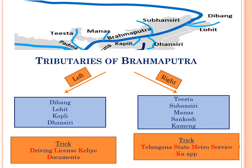The tributaries of the Brahmaputra — the left tributaries are Dibang, Lohit, Kopili, and Dansiri river. The trick to remember these is 'Driving License Ke Liye Documents.' Remember the highlighted letter, which represents the first letter of each left tributary name.